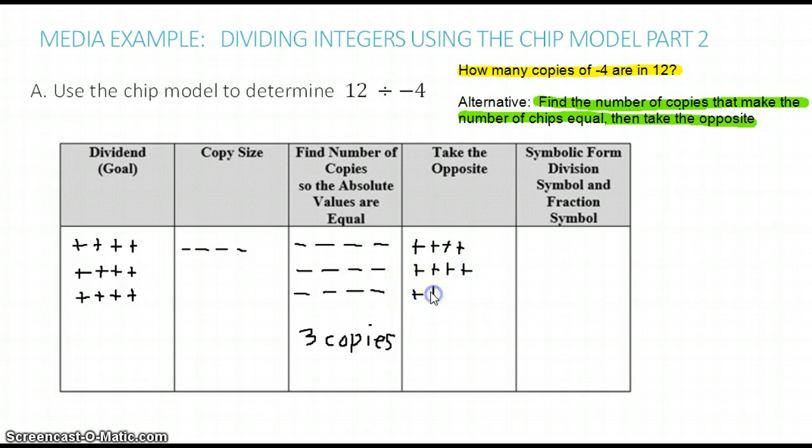And now we have 12 positive CHIPs. And it's the opposite of three copies. So this is our quotient or result.